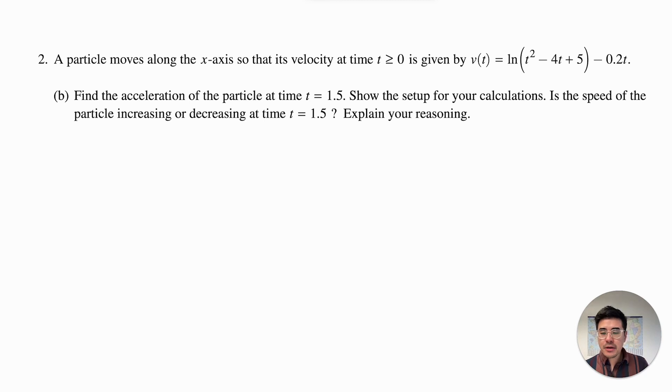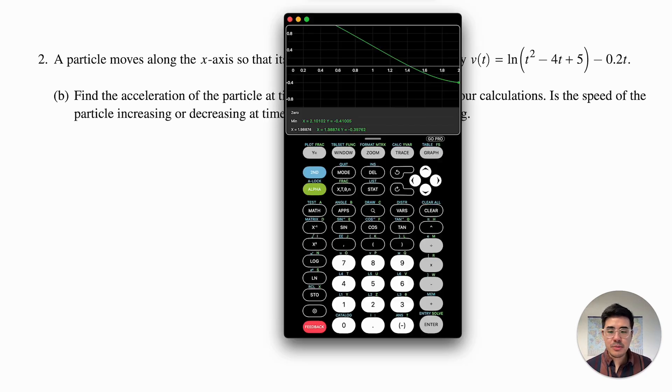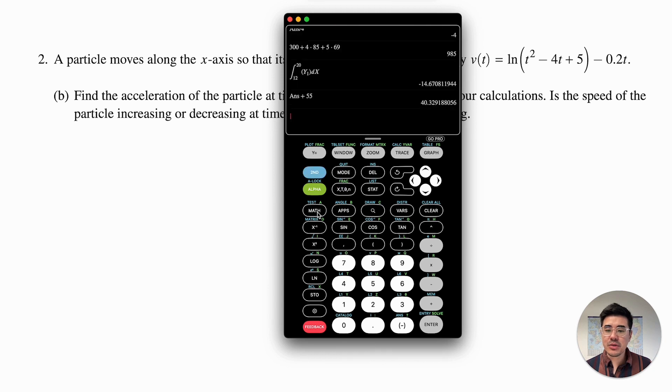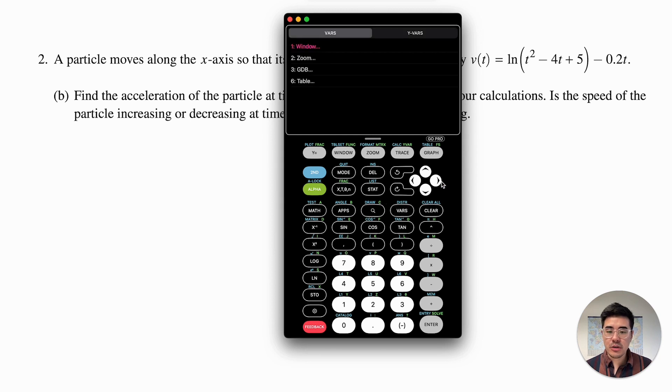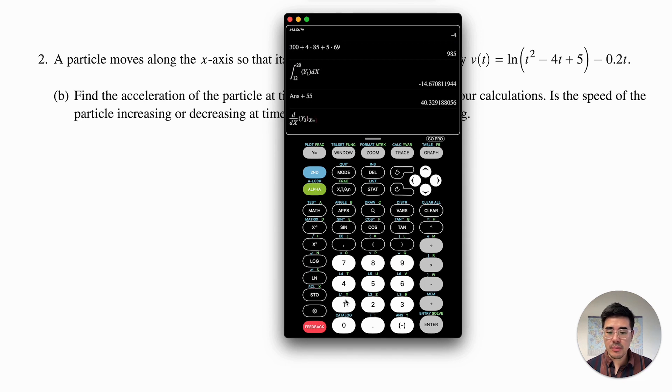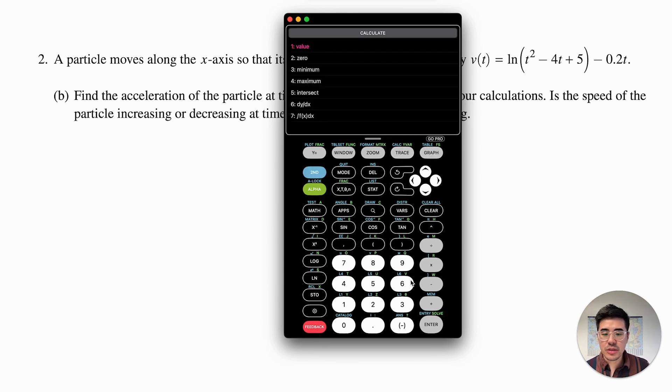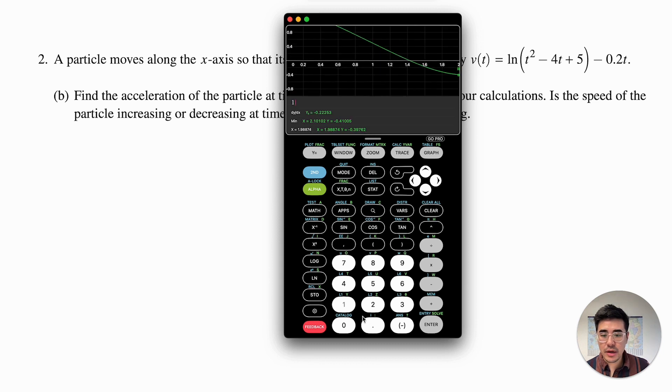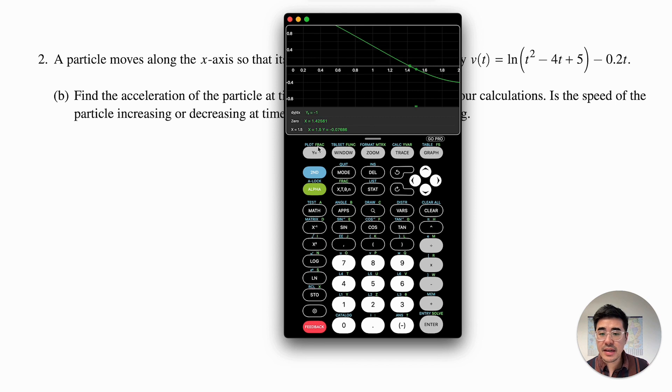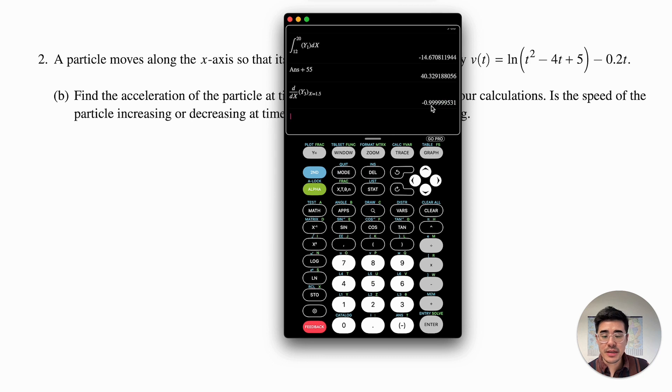Part B says find the acceleration of the particle at time t equals 1.5. So that one's pretty easy, right? Just remember that acceleration is the derivative of velocity. So I'll go to math and derive. I plug my function to y3, so vars functions y3. And then I'm going to plug in the point 1.5. Then I get negative 0.999. Another way you could do it is if you want to go to your graph and then you can go second calc and then you can do dy dx. And then I want to plug in the point 1.5 for that. I get that my derivative there is negative 1. So either way I get negative 1, right, because I'm going to have to round up there.